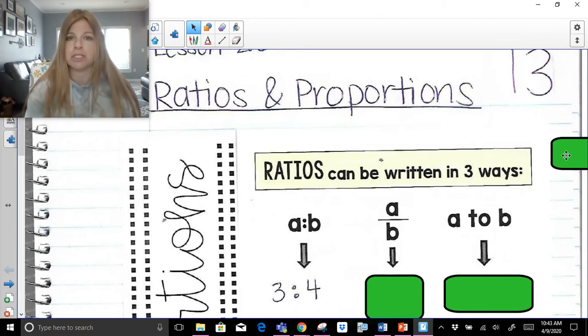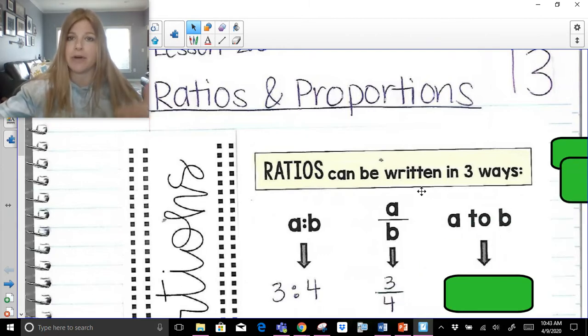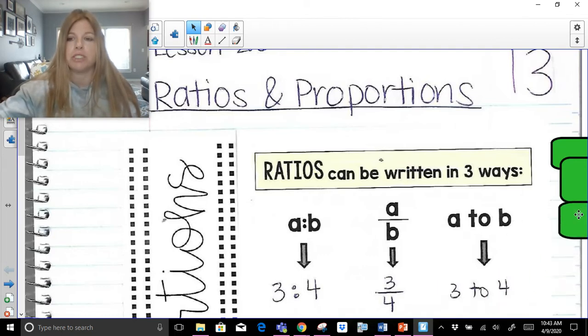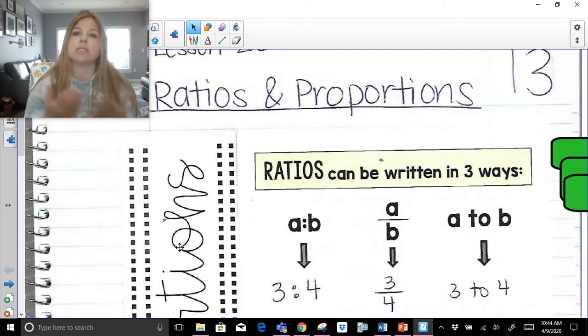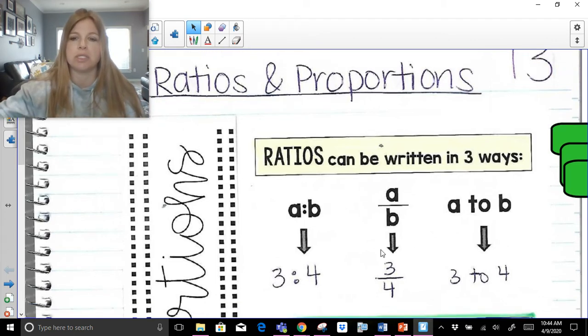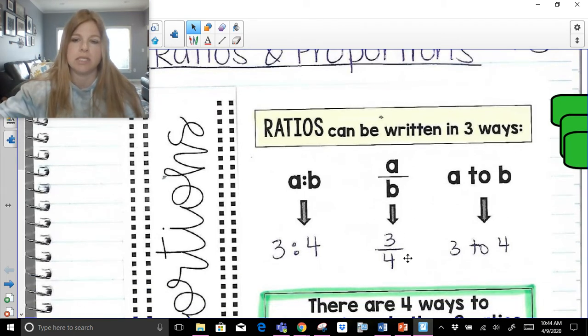So 3 apples to 4 oranges. 3 boys to 4 girls. Whatever it could possibly be. We're comparing two numbers and we're setting them up as a ratio. A over B. So I could say 3 to 4 in this way as a fraction, which is a really common way we often use ratios, which we're going to be taking a look at very soon. Or I can actually just use the word to. So 3 to 4, 3 apples to 4 oranges, 3 boys to 4 girls. A ratio is just simply a comparison of two values. And for the most part, we generally use them in this fraction form.